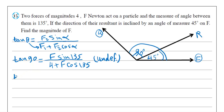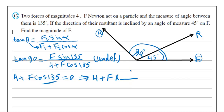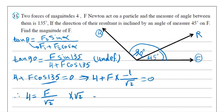So we put 4 plus F cosine 135 equals 0. It means 4 plus F multiplied by cosine 135, which is negative 1 over root 2, equals 0. So 4 equals positive F over root 2. Multiplying both sides by root 2, we get that F equals 4 root 2 newtons.